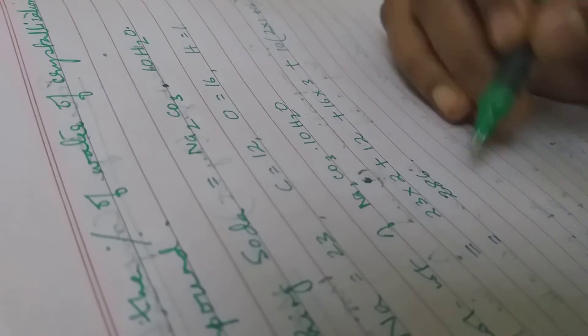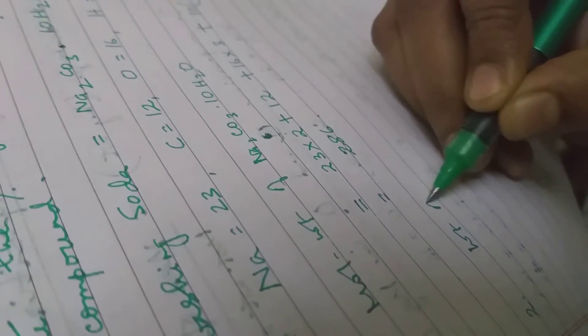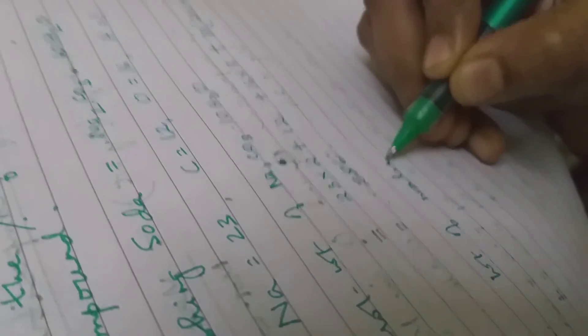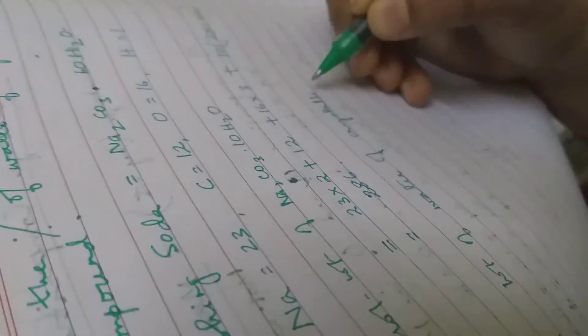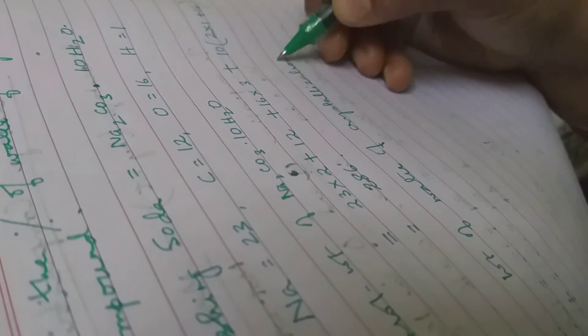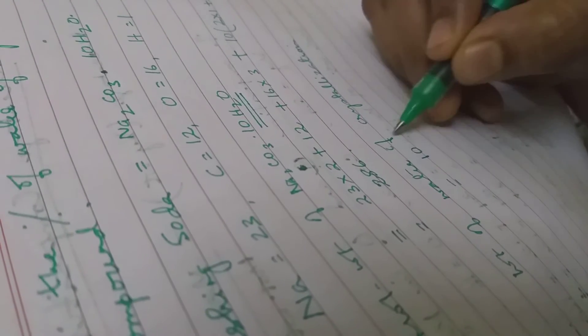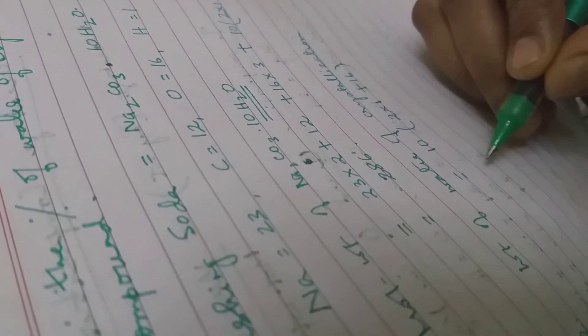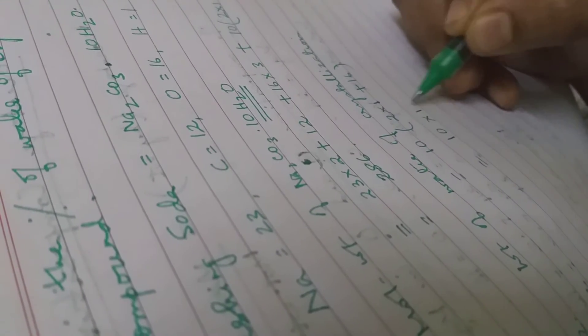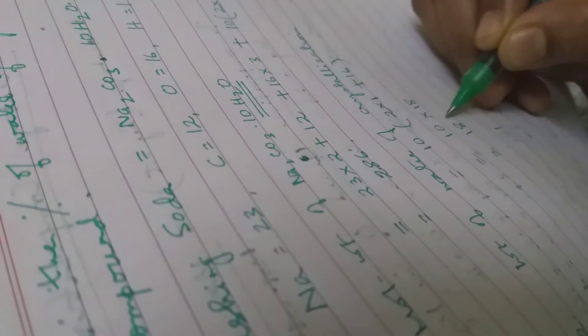Now after you find out the molecular weight, the second step is weight of water of crystallization. For weight of water of crystallization, you are just going to take the weight of 10 molecules of water. So 10 times 2 times 1 plus 16 equals 10 times 18, that is equal to 180.